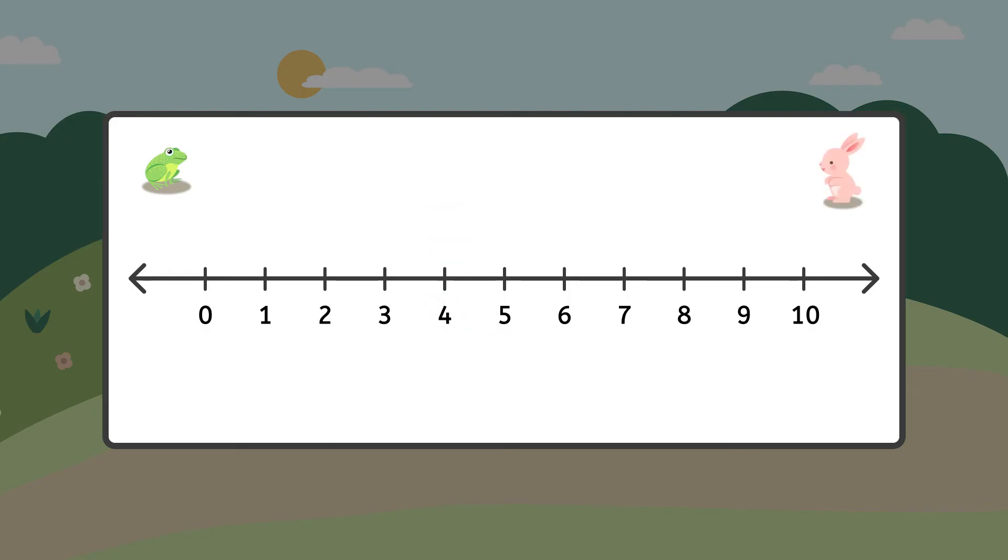Now, find the number that is one more than two. If you take one Forward Frog hop, you will find your answer. Three comes right after two, which means it is one more.